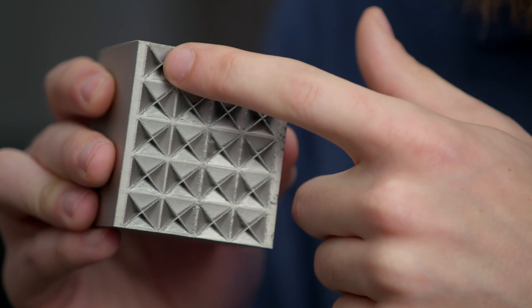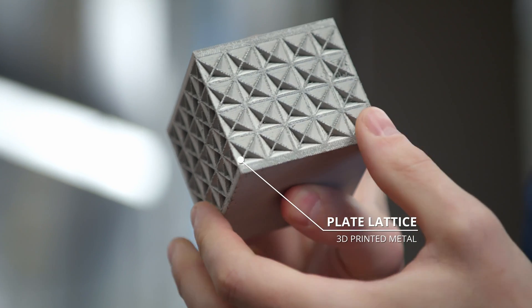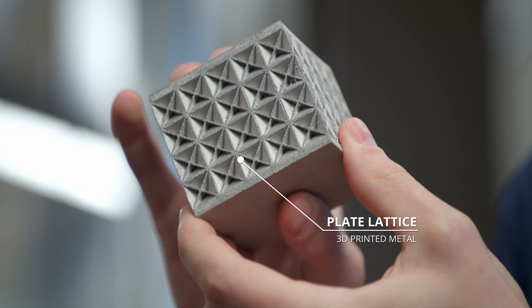So this plate lattice structure has repeating closed cells that you cannot access from the outside of the part. The ultimate result we would find would be a lighter structure that would have the same performance as some solid piece and that enables applications in transportation and things like that.